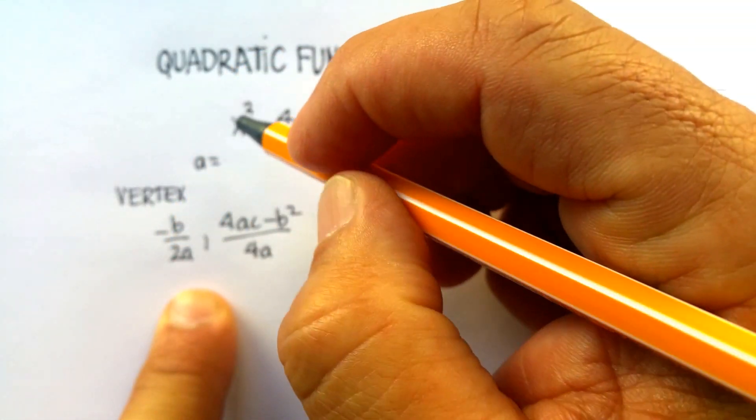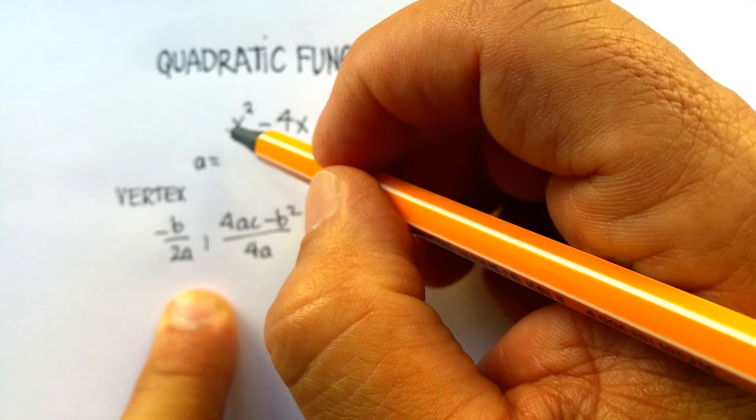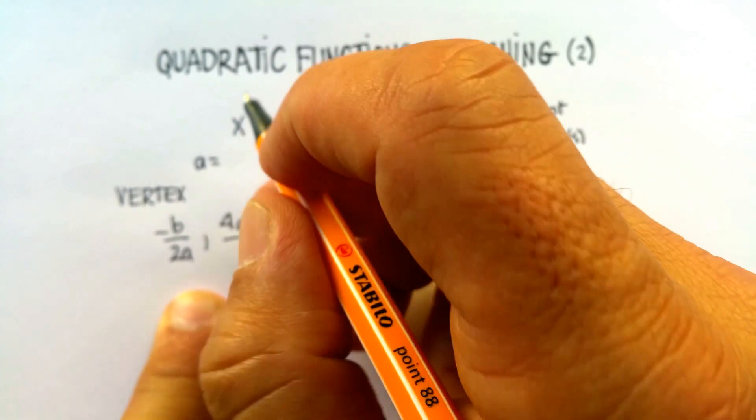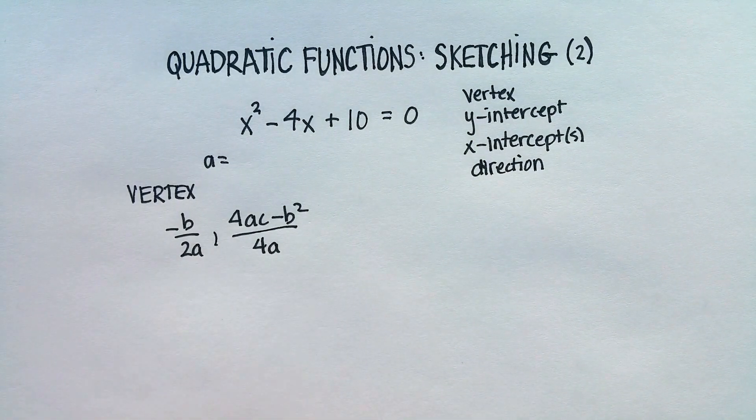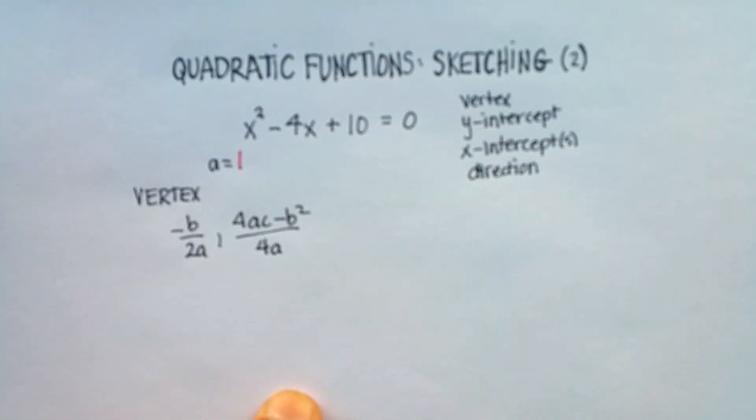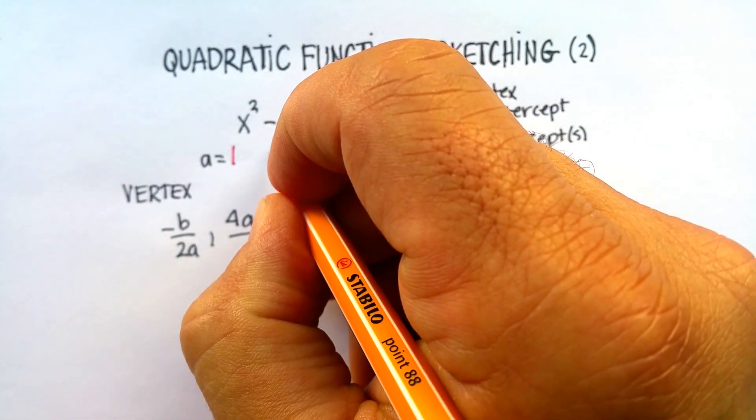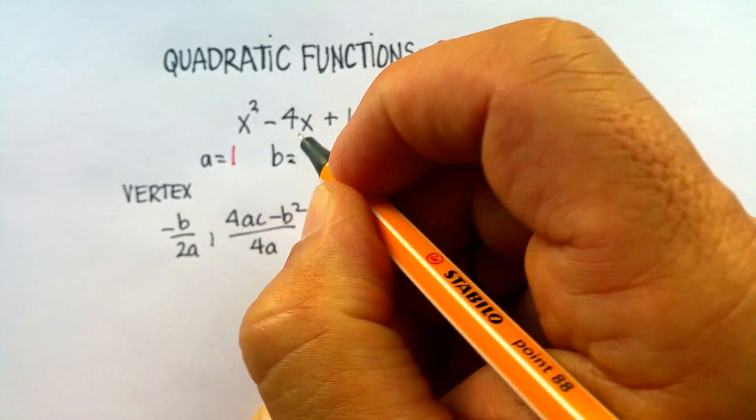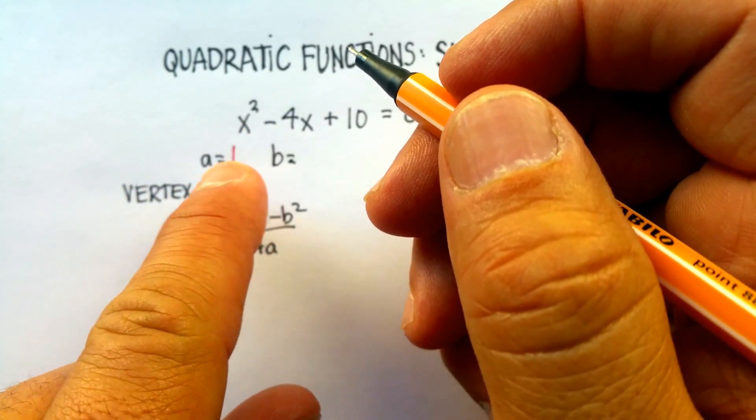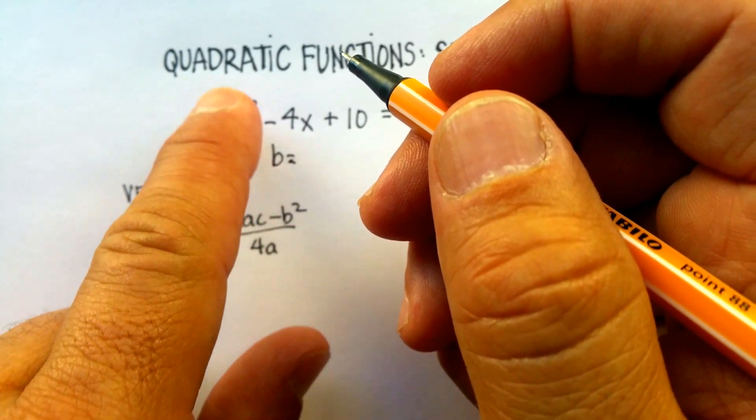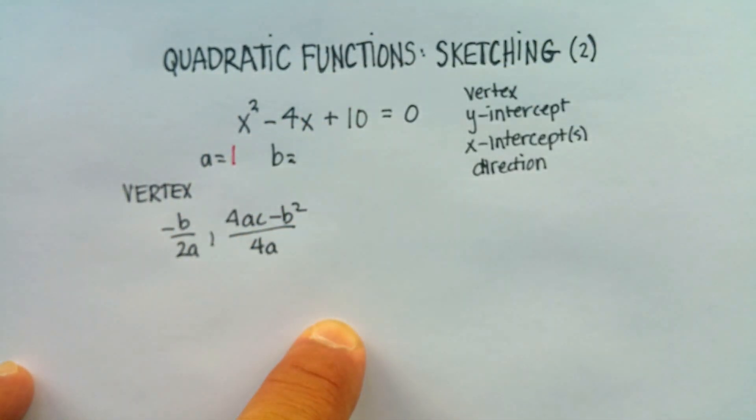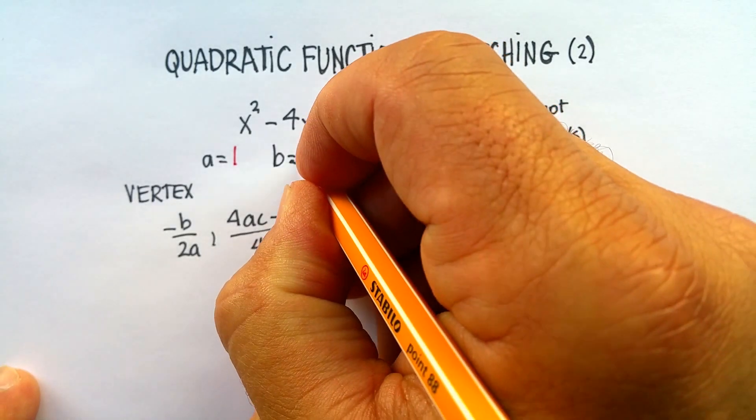The a is the quadratic coefficient, the number in front of the quadratic term. In this case, the number in front of the x squared, or the quadratic term, is just 1. My b is the coefficient in front of the linear term. I'm using these words very specifically: quadratic term, quadratic coefficient, linear term, linear coefficient. In this case, it's negative 4.